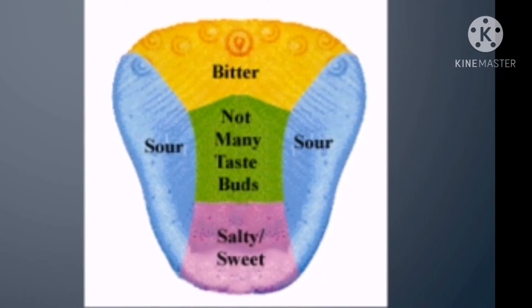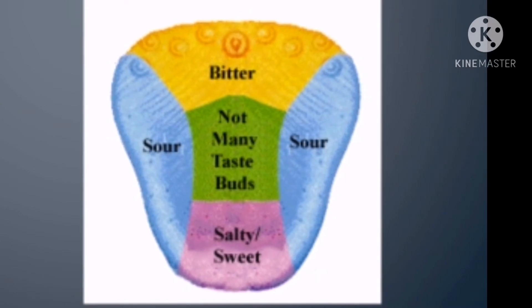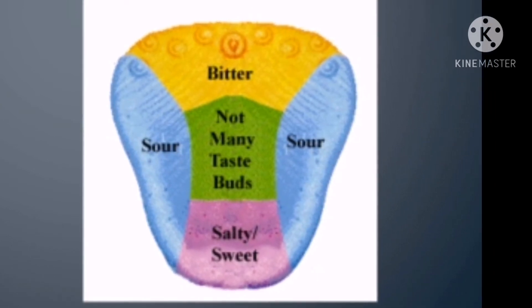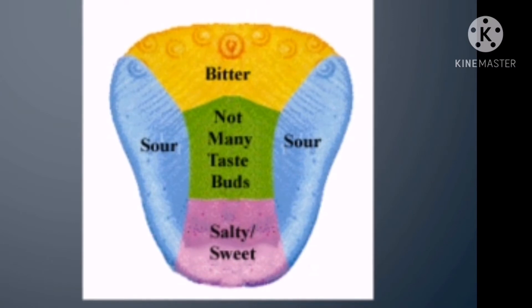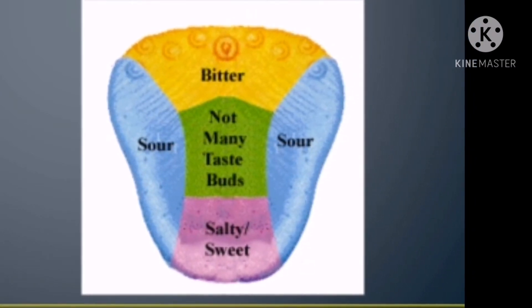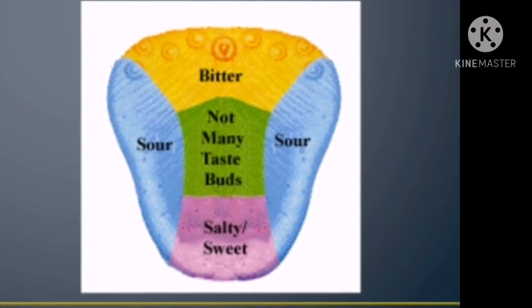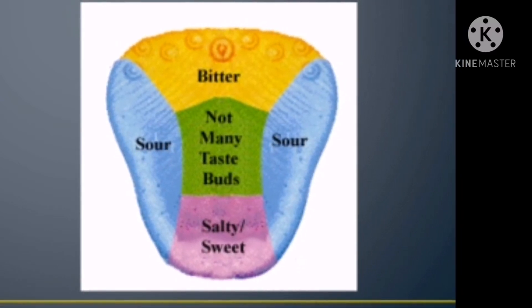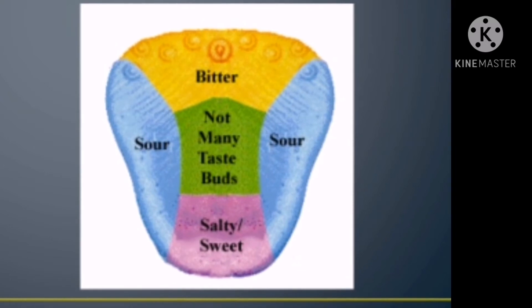You can see this picture where we can feel the taste buds. On the sides of the tongue we always feel sour taste. In the middle, not many taste buds. The front side of the tongue always feels sweet or salty, and by the end of the tongue we always feel bitter taste.